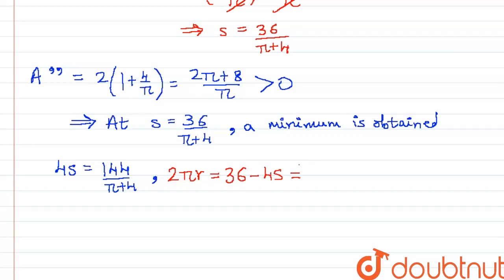And the piece of the circle will be 36 minus 4s which is 36 minus 144/(π plus 4), which is (36π plus 144 minus 144)/(π plus 4). Cancelling we get 36π/(π plus 4).